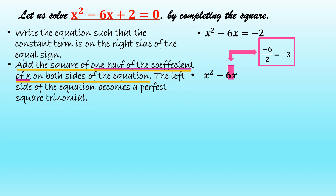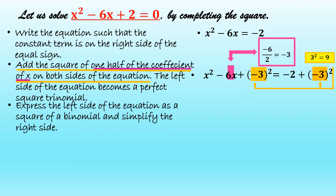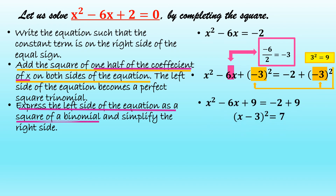Add the square of one half of the coefficient of x on both sides of the equation. We add the square of negative 3, which equals 9. Express the left side of the equation as a square of a binomial and simplify the right side. So we have x squared minus 6x plus 9 equal to negative 2 plus 9, and squaring the left side we have quantity x minus 3 squared is equal to 7.